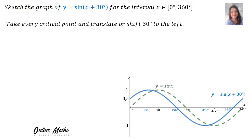Now, the question says: sketch the graph of Y is equal to sin(X + 30) for the interval X is an element of 0 up to 360 degrees. What we will do is take every critical point and translate or shift 30 degrees to the left.